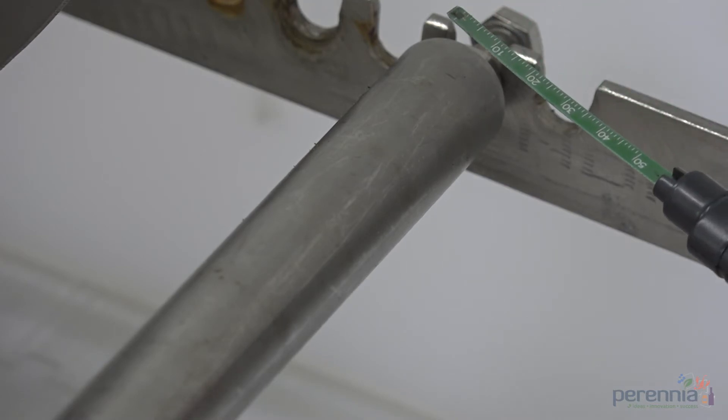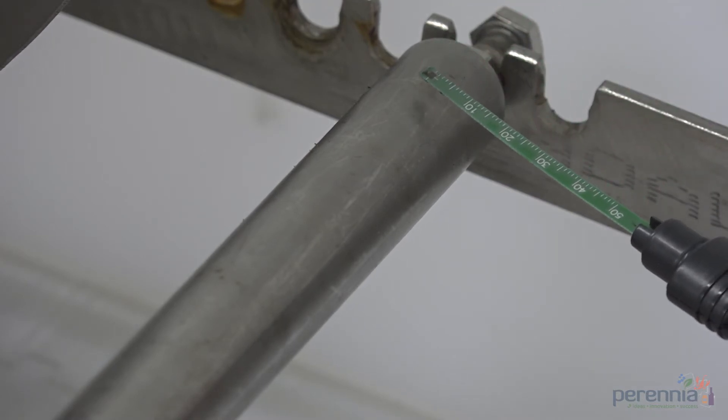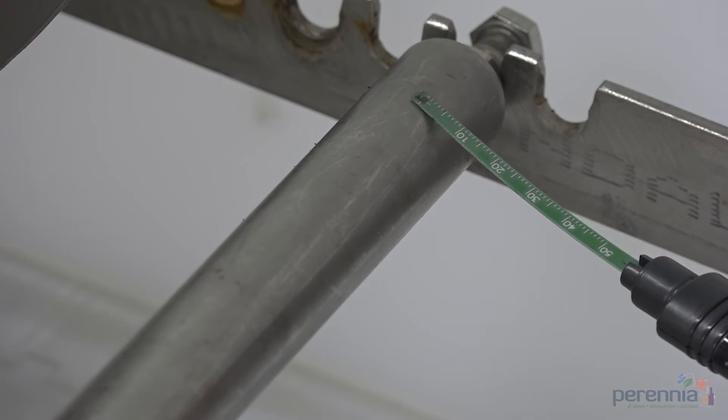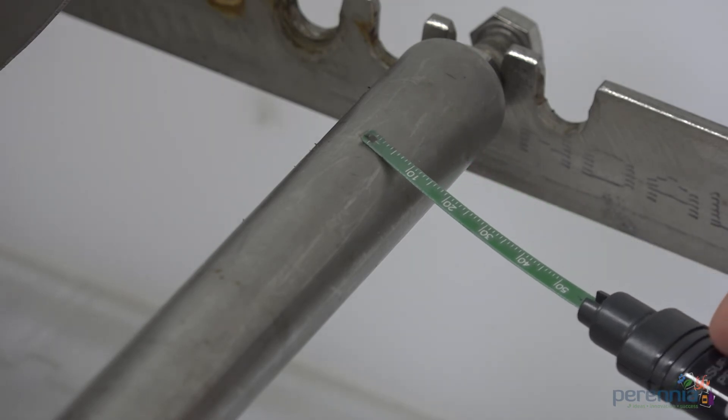When using the digital meter, place the probe on the surface and slide along the magnet with consistent pressure.